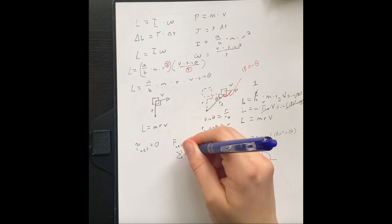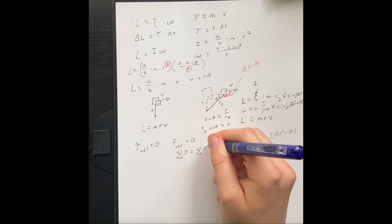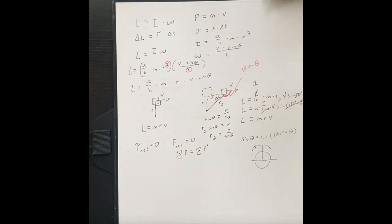momentum is conserved. All of the momentum, linear momentum, of moment one is going to be equal to all the linear momentum of a moment later, after a certain event.